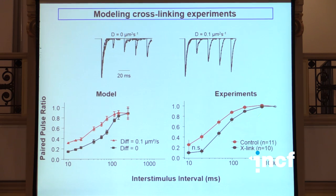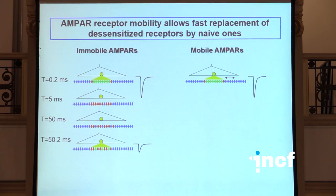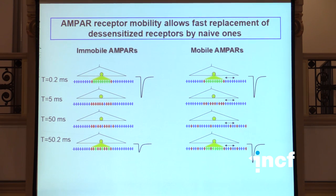Looking at the impact of this diffusion on the recovery from paired pulse depression - this is the model, this is the actual experiments. You see they are kind of similar, although not perfectly parallel yet. When you cross-link receptors or when you model diffusion of zero, you have a slower recovery from depression. One difference between the model and the data is that in the experiments they depress a little more, but that actually is just a matter of adjusting the parameters of the kinetic model of the receptors.